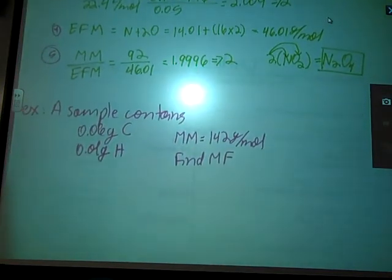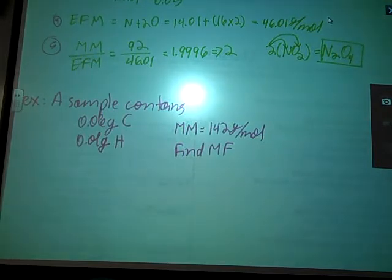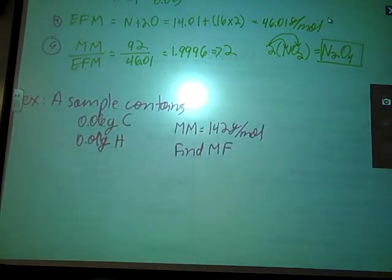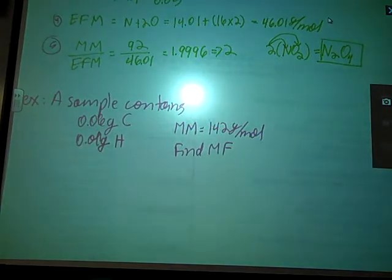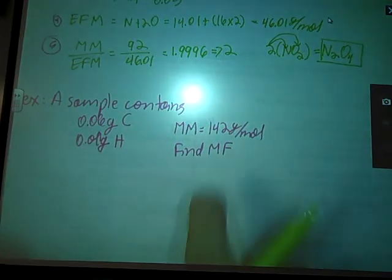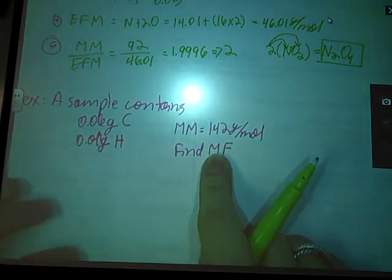A sample contains 0.06 grams carbon, 0.01 grams hydrogen. Excuse me while I move my table. Oh, it's 0.11 gram hydrogen. That might make a difference. I copied this off of another practice sheet I have. Molar mass is 142. Find the molecular formula.